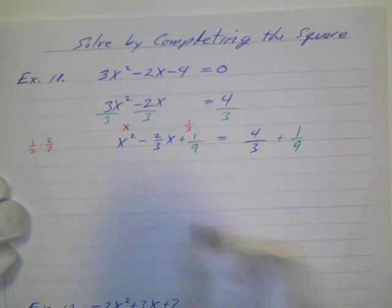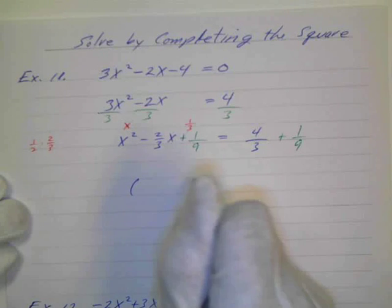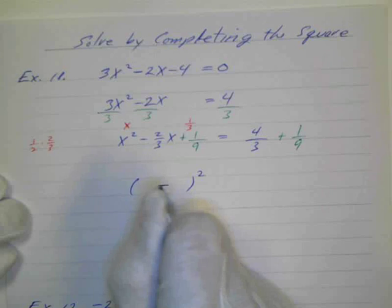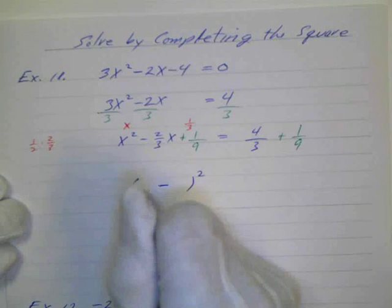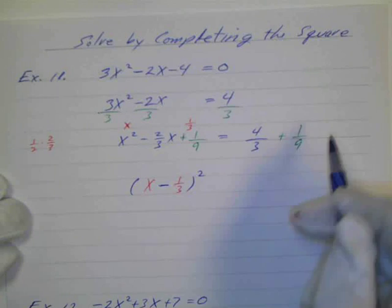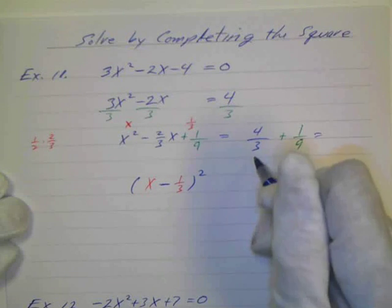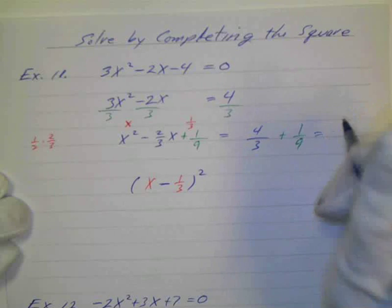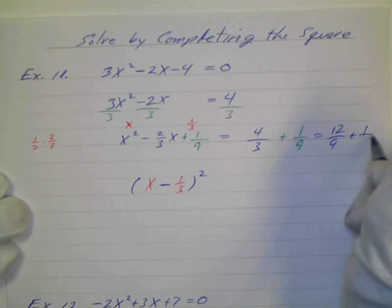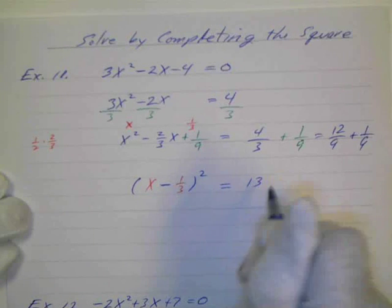Now I know, again, this is going to be in the form of a trinomial square. So it's going to be x minus 1 third, and I can add these up over here, 4 thirds is the same thing if I multiply the top and the bottom by 3, 12 over 9, plus 1 over 9 is 13 over 9.